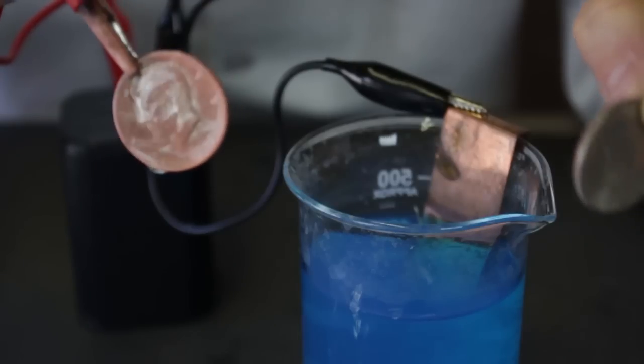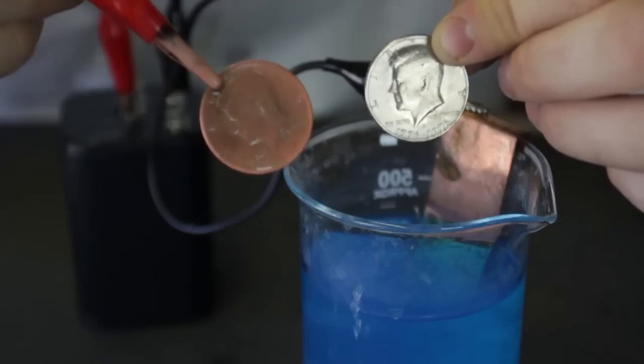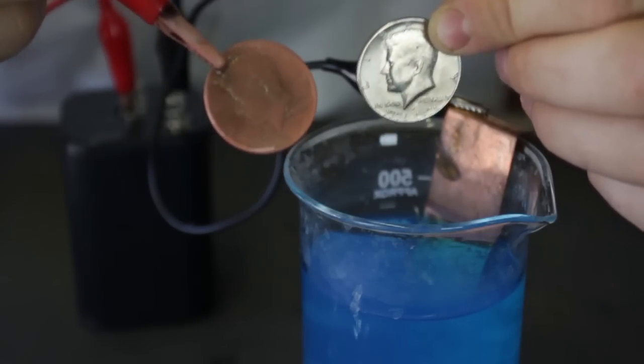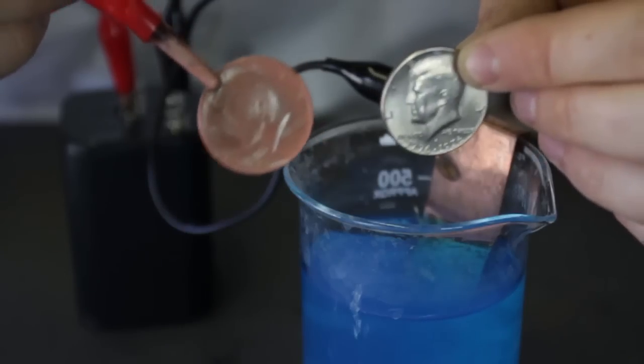This is what it used to look like. So this is how you copper plate a coin with electricity and copper sulfate and some water.